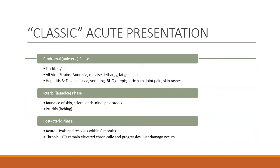Hepatitis B, though, oftentimes will also have fever, nausea, vomiting, right upper quadrant or epigastric pain, joint pain, even muscle aches, and skin rashes. So hepatitis B has a more serious prodromal presentation than the others.